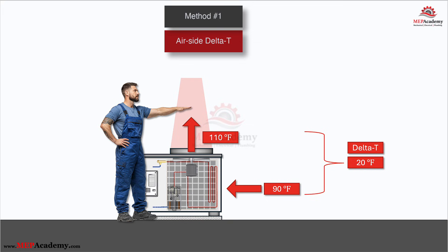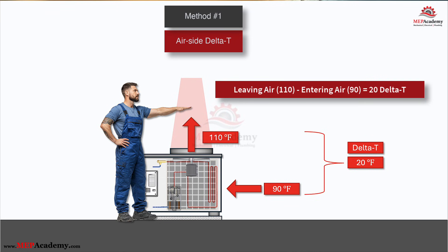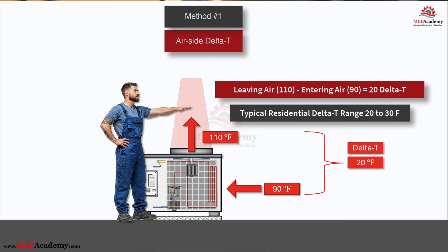You stick a thermometer in the ambient air going into the coil, then stick it in the hot air blowing out the top. If the air entering is 90°F and the air leaving is 110°F, your delta T is 20°F. Leaving air minus entering air — most residential units equal 20 to 30°F rise. Takes 30 seconds, zero tools except a thermometer. This measurement tells you how much heat the condenser is rejecting into the atmosphere. It's an airflow and heat rejection performance measurement, not a refrigerant side measurement.